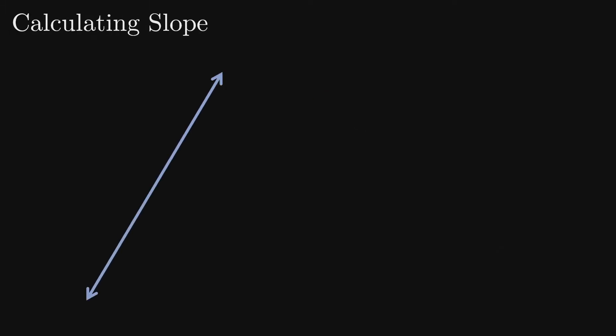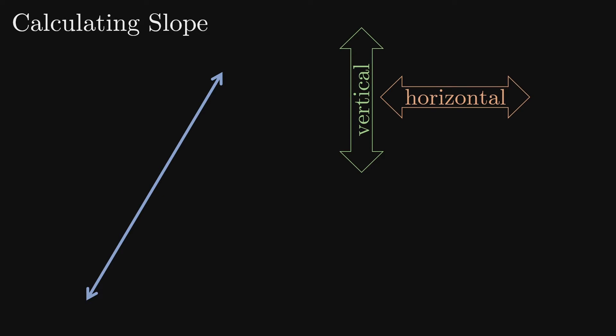We calculate the slope of a line by comparing its vertical change to its horizontal change for any two points on the line. That is, we compare how much we go up or down to how much we go over to get from one point on the line to another.